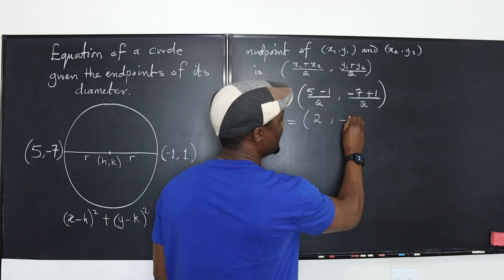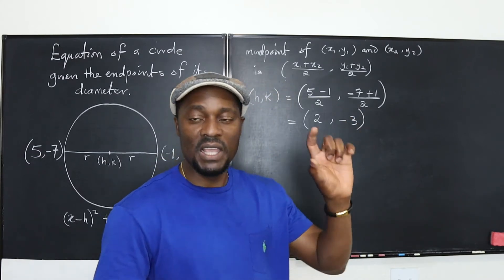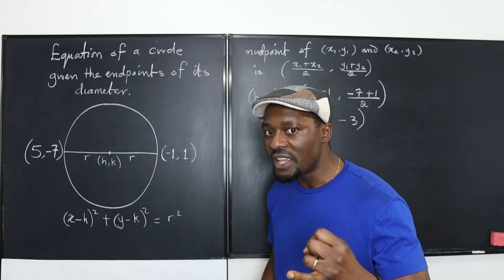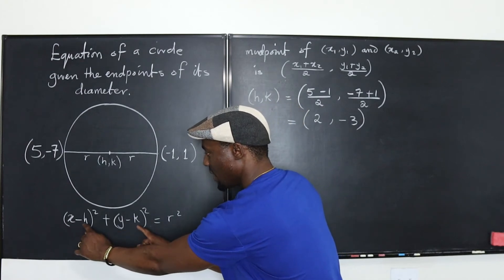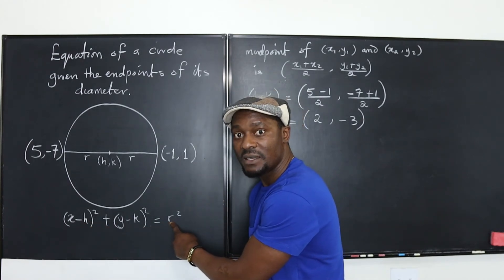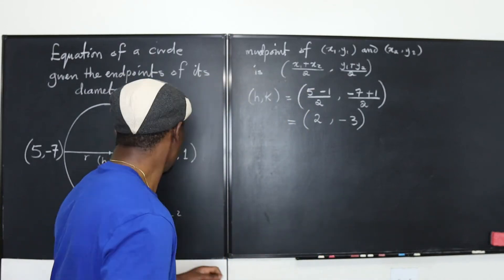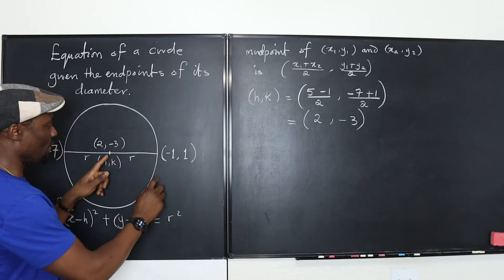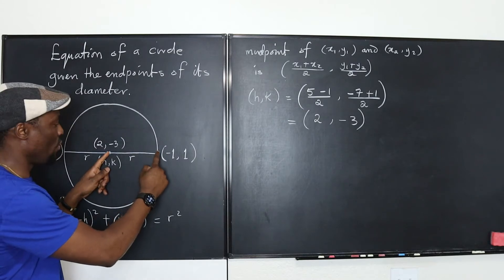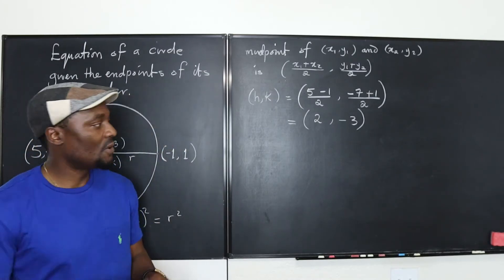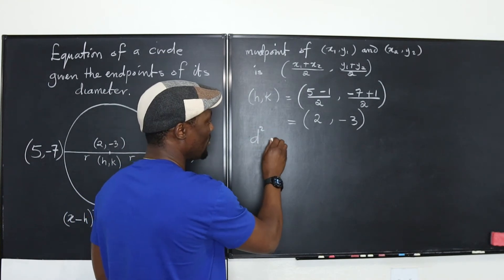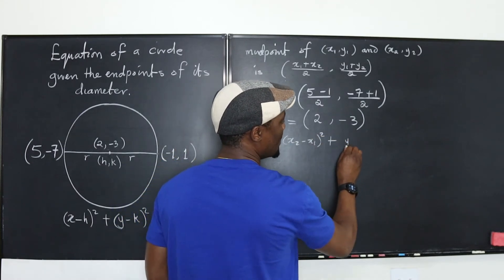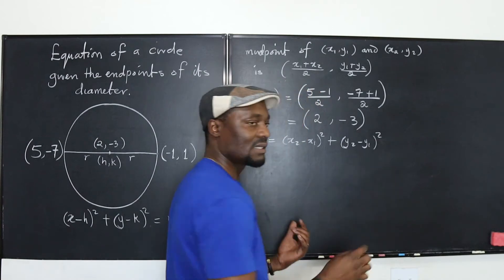So the center of this circle is the point 2, negative 3. And that's what this point is. So we already know what h is and we know what k is for this formula. The only thing that is still missing is the radius. Well, you know the radius. Because if you know this point, so I'm going to mark this point to be 2, negative 3. So the radius is the distance from the center to this point. So what's the distance between two points? The distance formula says that d squared, the distance between two points, is equal to x2 minus x1 squared plus y2 minus y1 squared. That's the distance formula.